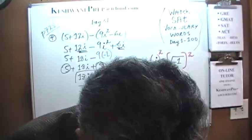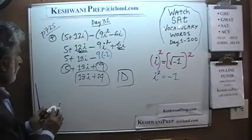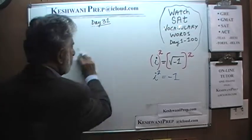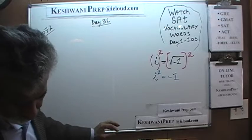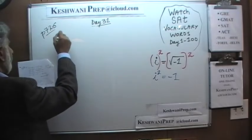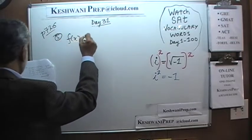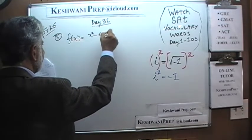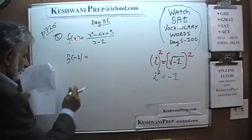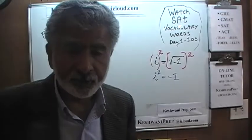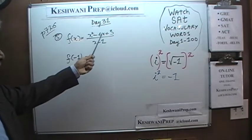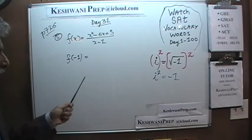We go on to the next page. Number 5, on page 726. So we are given a function here, and the question simply is: what is the value of this function when x is equal to negative 1? So let's do that — wherever we see x, we are going to substitute negative 1.